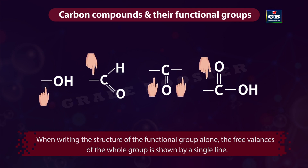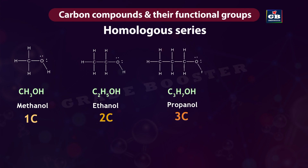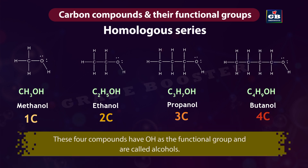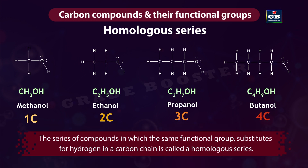Homologous series: CH3OH is methanol — it has one carbon. C2H5OH is ethanol — it has two carbons. C3H7OH is propanol — it has three carbons. C4H9OH is butanol — it has four carbons. These four compounds all have OH as the functional group and are called alcohols. Even though the number of carbon atoms in each compound is different, they have similar chemical properties. Such a series of compounds is called a homologous series.